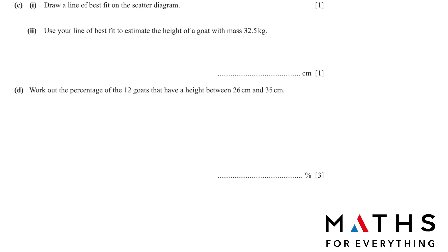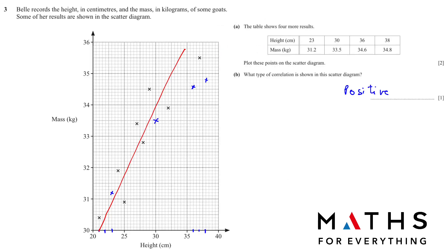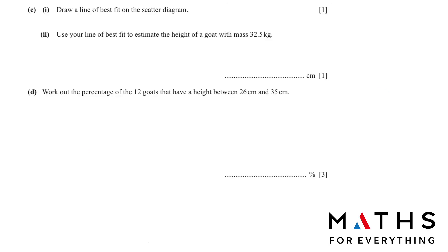Next question. Use your line of best fit to estimate the height of a goat with mass 32.5. The mass is given to us. Mass is this vertical line. 32.5 is here. So look at the corresponding height. Go down and you will get 26. If your answer is anywhere between 25 to 27, it will be accepted there.